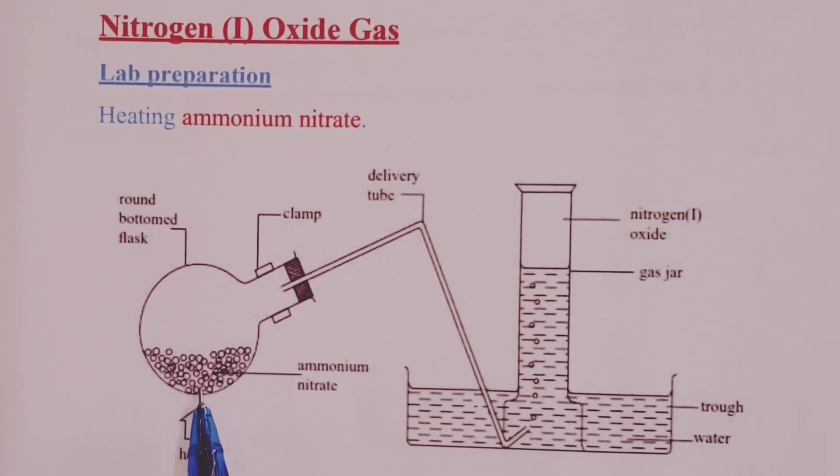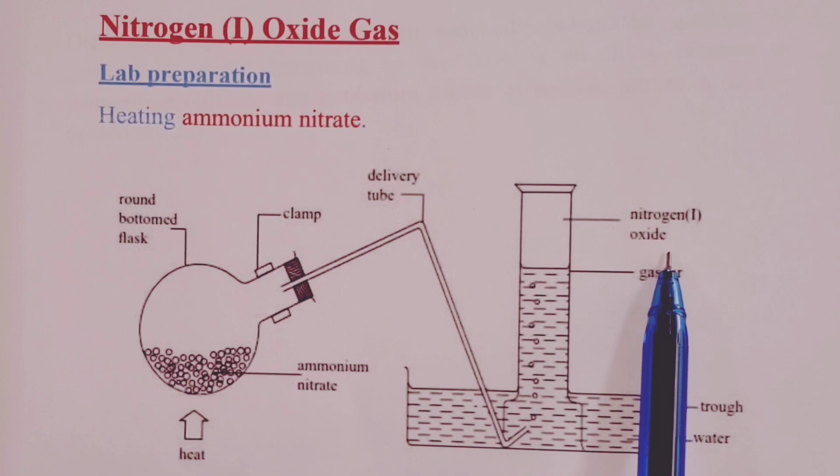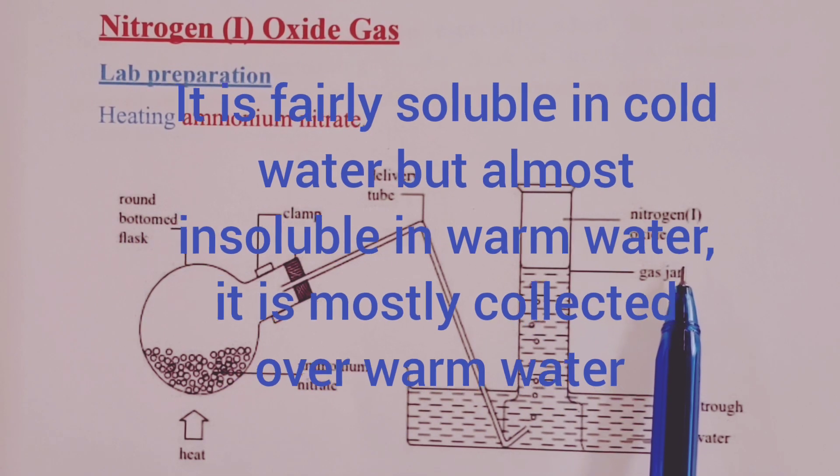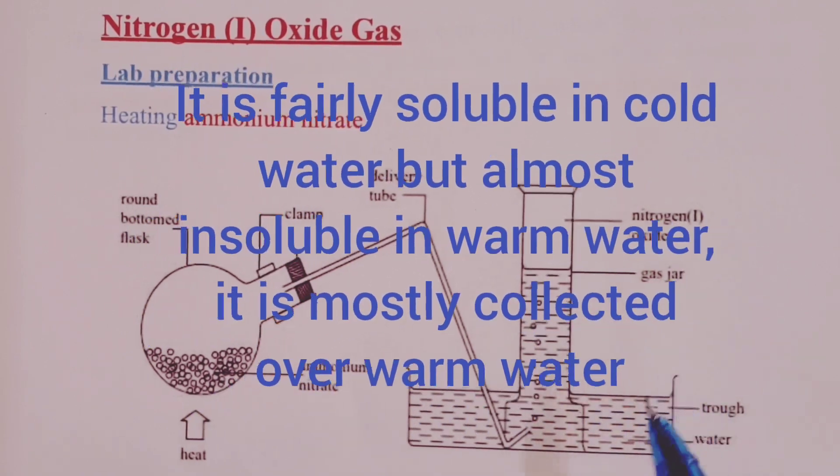Nitrogen (I) oxide is obtained in a lab setup by heating ammonium nitrate. Now, we shall heat it in a round-bottomed flask and collect our nitrogen (I) oxide over water. This is made possible because as much as the gas is fairly soluble in water, we can still collect it over water.